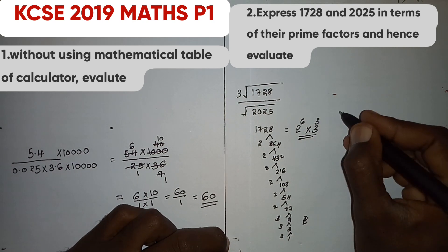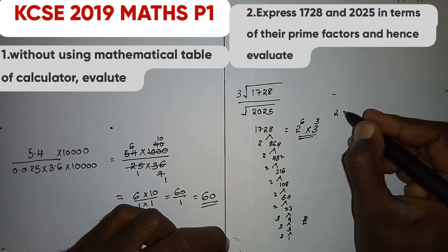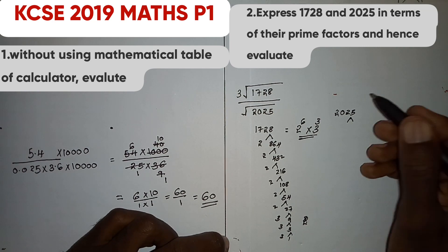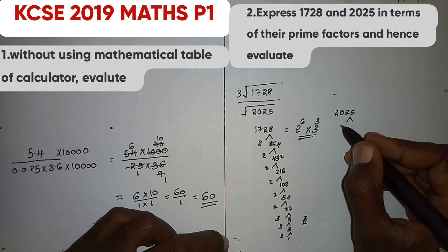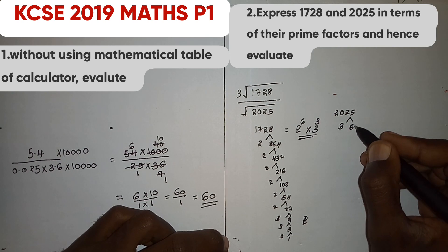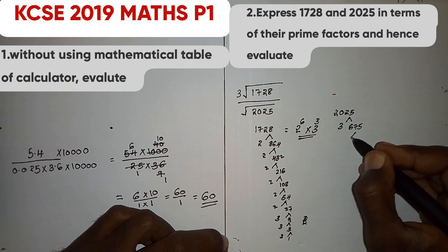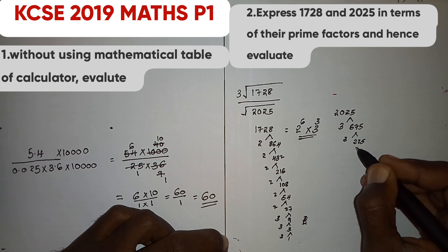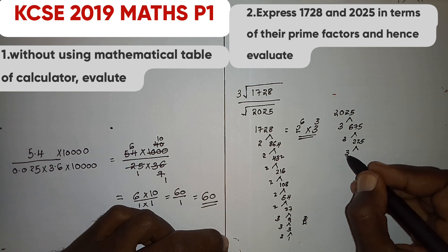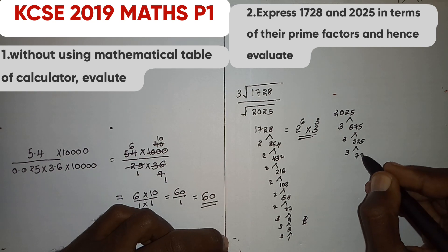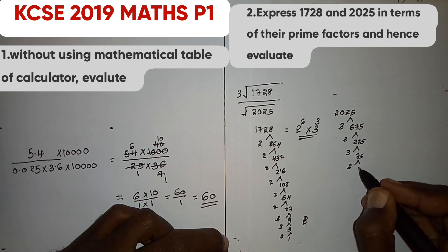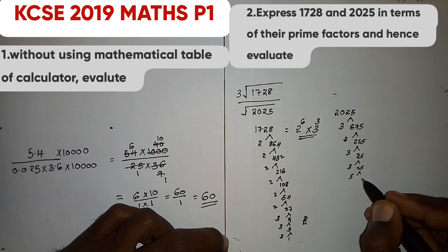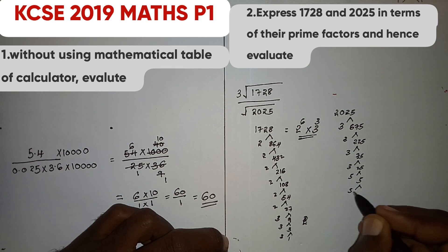Let us find the prime factors of 2025. The smallest number divisible by 2025 is 3, giving 675. Then 3 gives 225, 3 gives 75, 3 gives 25, 5 gives 5, and 5 gives 1.